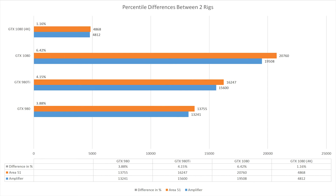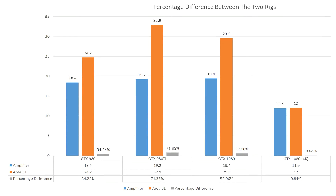After that we looked at the difference between the graphic scores, with a percentile difference shown above each result. I was a bit surprised at how small the difference was — the GTX 1080 in 4K is only about a 1% difference. One possible reason is that my Area 51 doesn't have 4K screens, and 3DMark scales it up to a supposed 4K, so maybe it didn't quite perform as expected. Either way, the GTX 980, Ti, and 1080 all concurrently creep up — 3.88%, 4.15%, and 6.42% respectively.